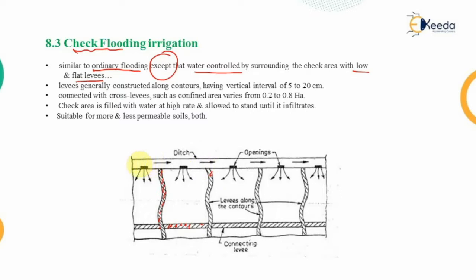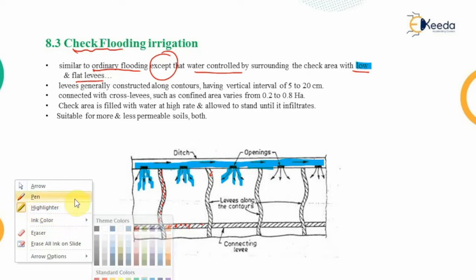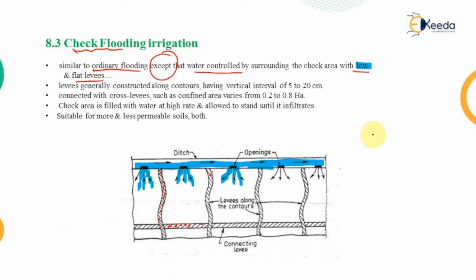The water flows in from the supply ditch, which is highlighted here, and floods the check area through gates or openings. This water is kept within the field with the help of check boundaries. These check boundaries are known as low or flat levees, or in the local language they are known as 'domes'.